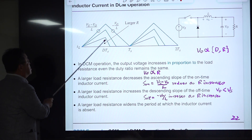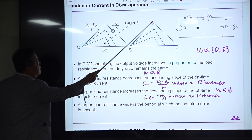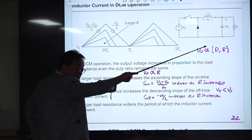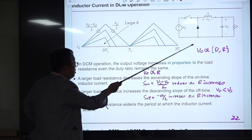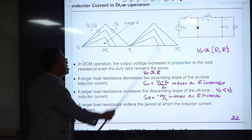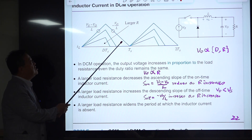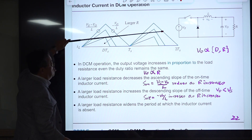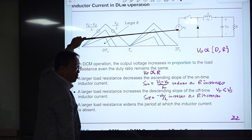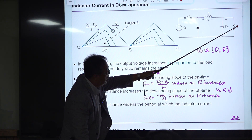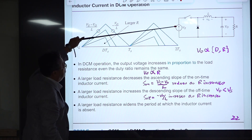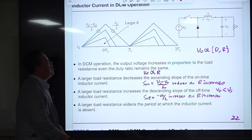This is the borderline between CCM and DCM operation. For some fixed value R — we call it R-critical — the current starts from zero, goes to the peak value, returns to zero, and repeats this periodic operation. If you increase R, then this average value will be reduced, and the load current should be smaller than the previous one.